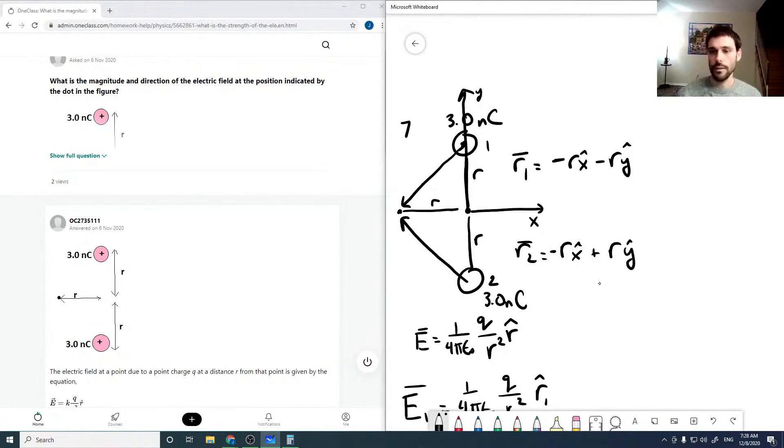These are from the positions of the charges, not from the origin. We can solve for our magnitude, which would be the square root of r squared plus r squared, so that's summing the individual squared components, and that would be square root of 2r. Then our r1 hat is just our vector over our magnitude.